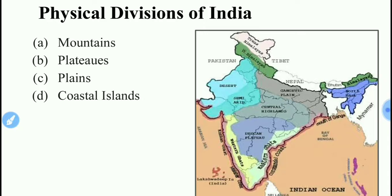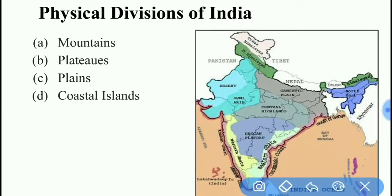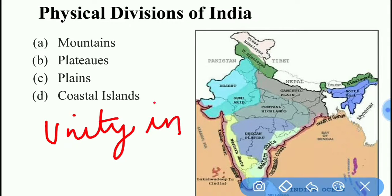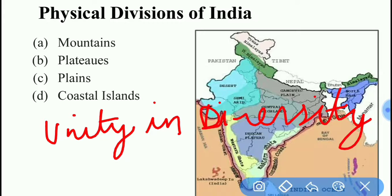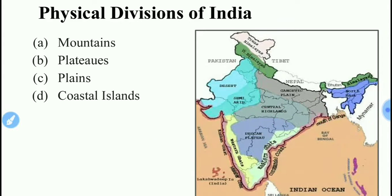Now the second thing I will be talking about is the physical divisions of India. There is a great variety in the climate, vegetation, and wildlife, as well as language and culture in India. That's why we have unity in diversity. In spite of having all the language and other differences, we are one country and we have a working and functional democracy.